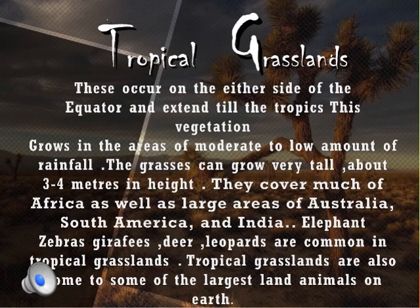Tropical grasslands are found in the tropical zone on either side of the rainforest. They are extensively located in Africa where they are called savannas. They are also found in northern Australia, the Brazilian highlands, and the Guiana highlands. They have a dry season with some rainfall in summer. The landscape is dotted with tall, coarse grasses interspersed with small trees and stunted thorny bushes. Animals found here include elephants, giraffes, zebras, and leopards.